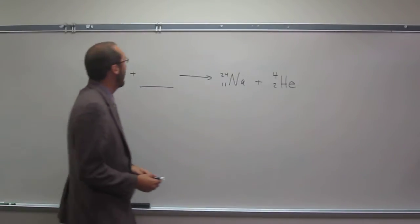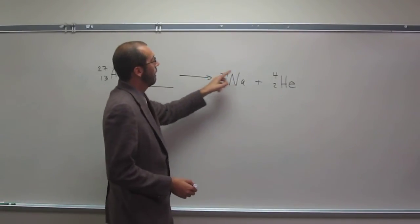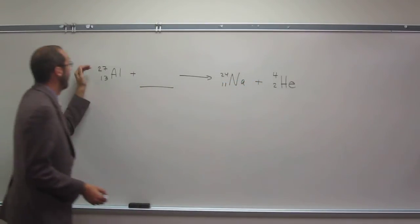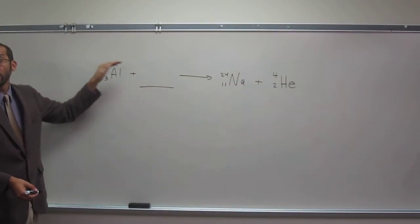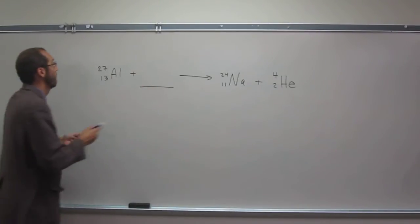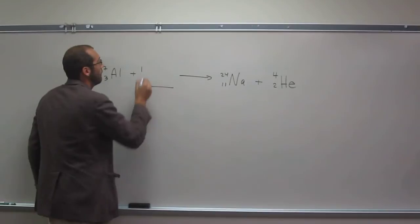So if we add up our total mass number, that's going to be 28 here, and this is 27, so this mass number has to be 1. Is everybody okay with doing that? So 1, there.